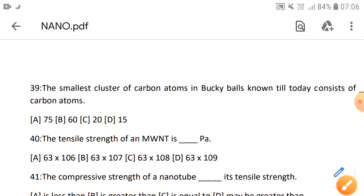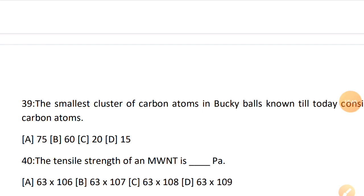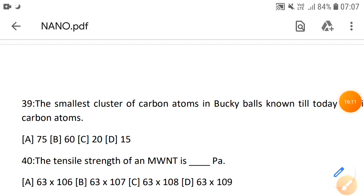Next question: the tensile strength of MWNT is dash Pascal. MWNT means multiple wall nanotubes, which have multiple walls. They have particular Young's modulus and particular strength. The strength is option D: 63 into 10 to the 9 Pascal. This is the strength of multiple wall nanotubes.